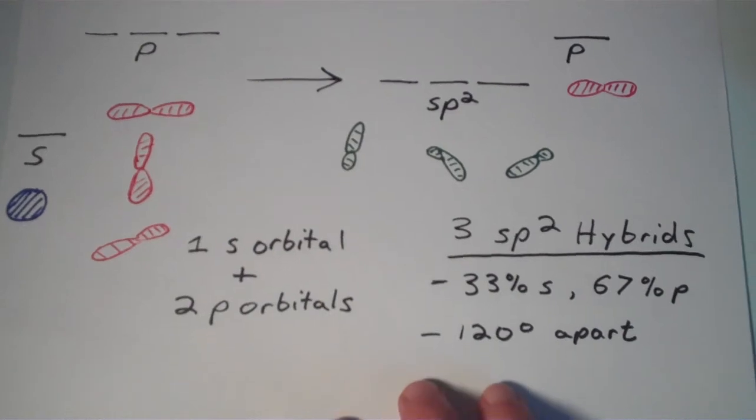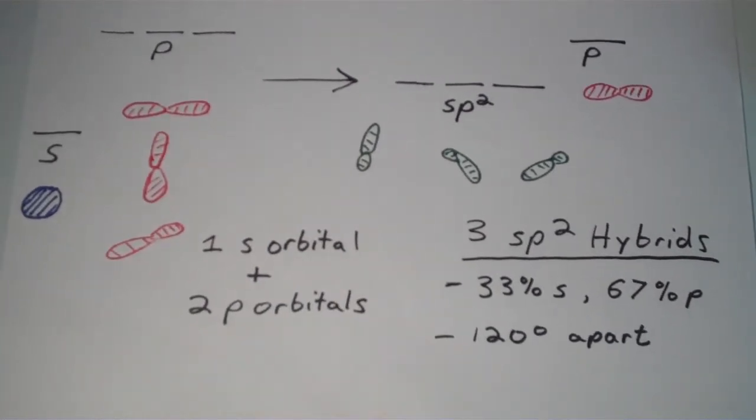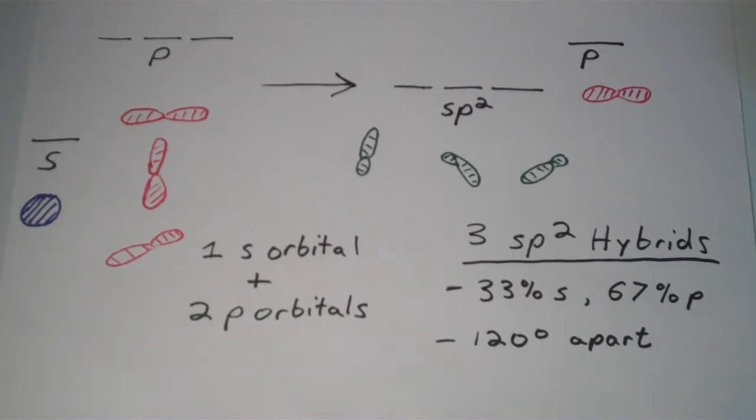So these sp² hybrids are all energetically equivalent, and they all have the same shape. And they are all one-third s character, or 33%, and two-thirds, or 67%, p character.